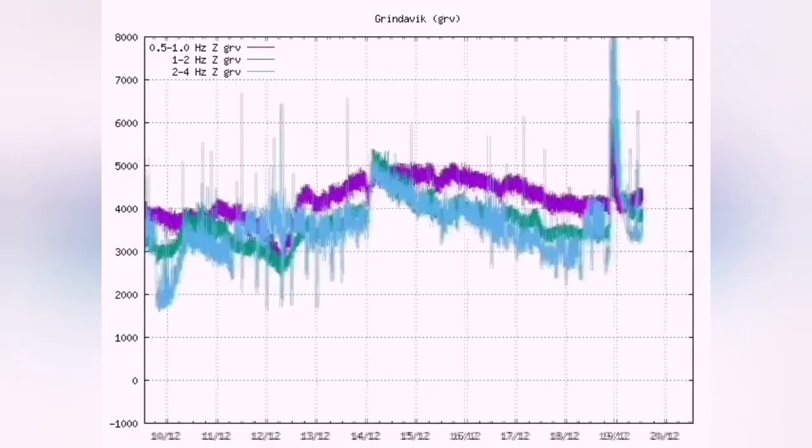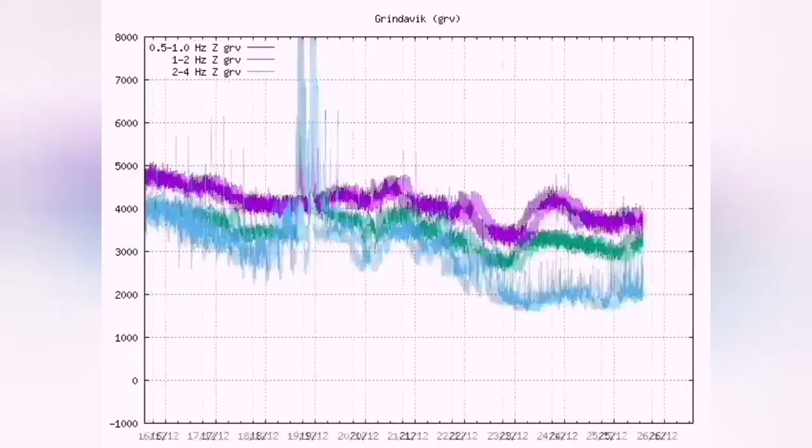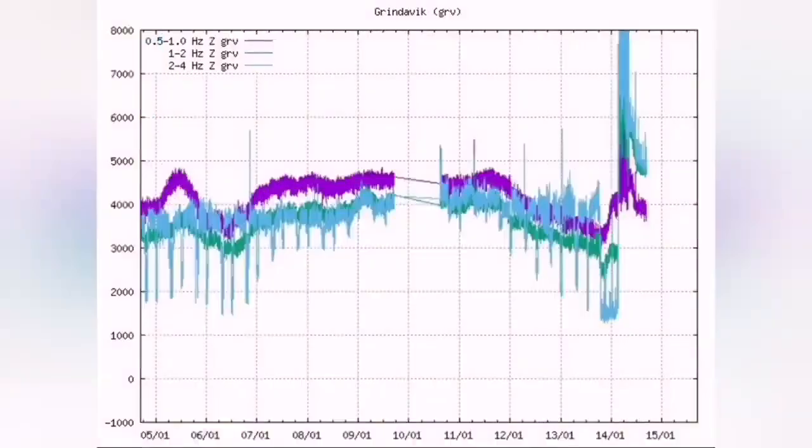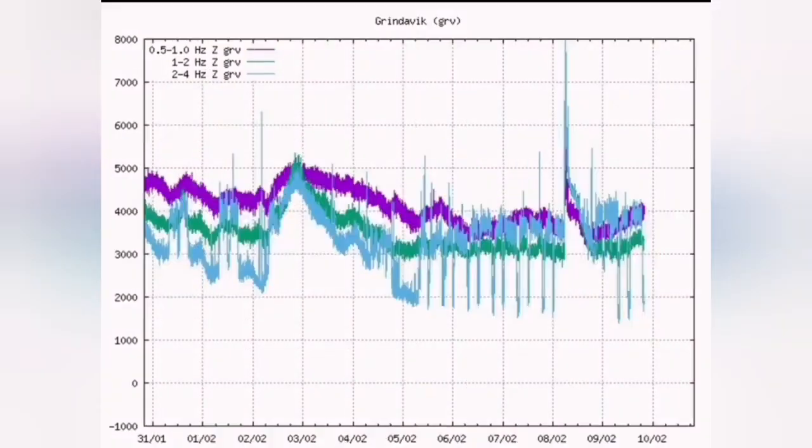You see the wave coming, the tremors, and on the chart you see them sudden rise in the tremors. That was the December 23rd, this is the January and this is a February eruption as you can see.